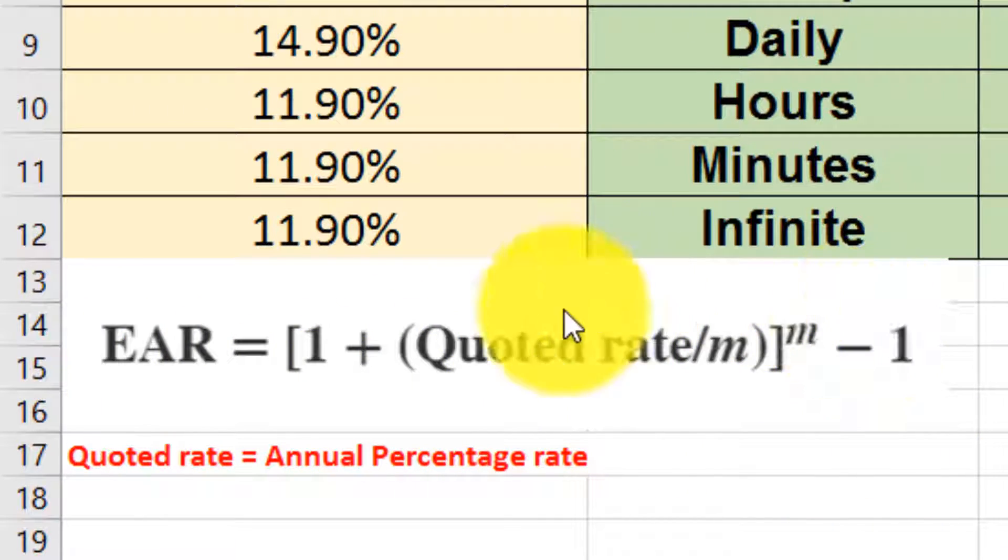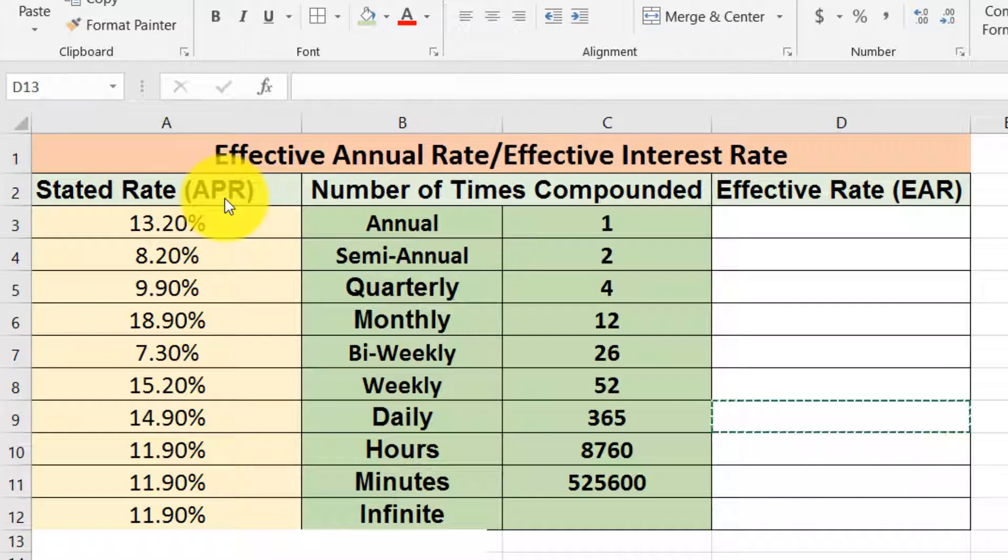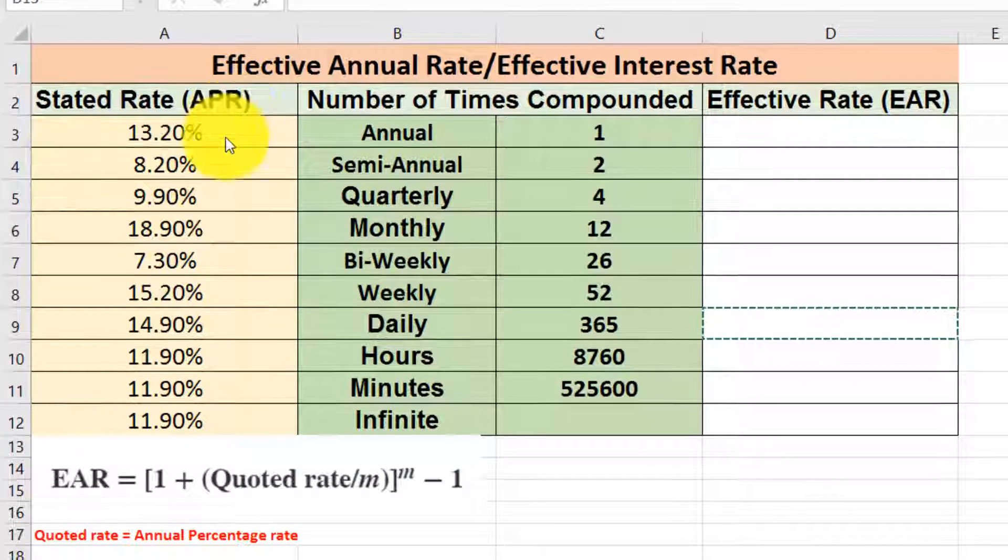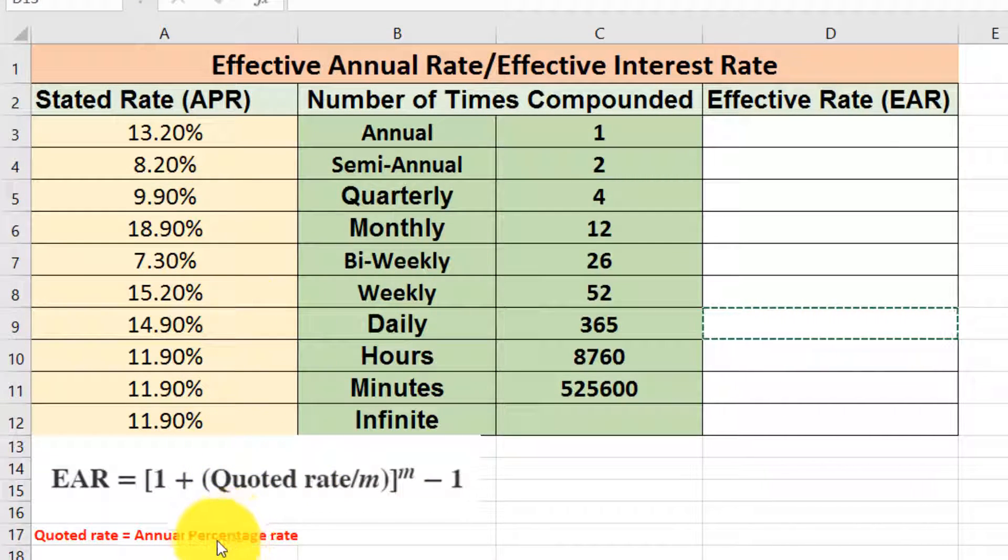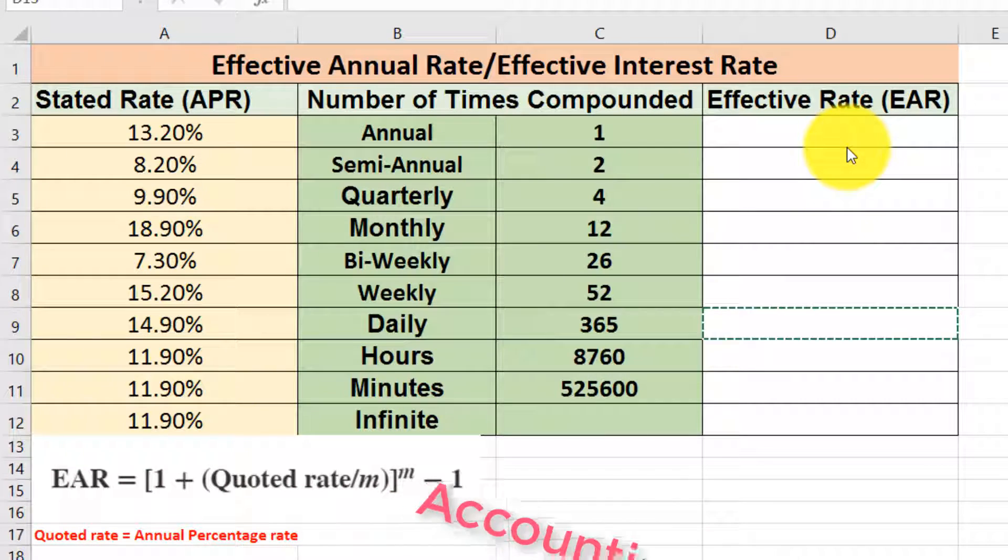equal to this formula. Here is a quoted rate. Quoted means the annual percentage rate, sometimes we only use APR. APR means annual percentage rate. Sometimes we will say this is the nominal rate. Different books use different wording. Do not confuse anything; the concept is the same.